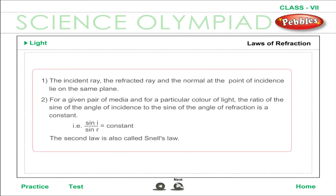Laws of refraction: the incident ray, the refracted ray, and the normal at the point of incidence all lie on the same plane for a given pair of media and for a particular color of light. The ratio of the sine of the angle of incidence to the sine of the angle of refraction is a constant — that is, sin i / sin r = constant. This second law is also called Snell's law.